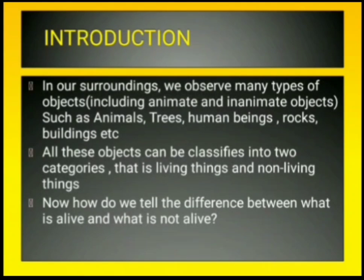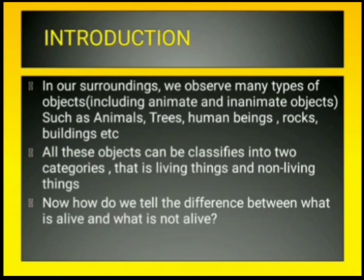Friends, in our surroundings we observe different types of objects. Some of these objects are animate, meaning living, and some objects are inanimate, meaning non-living. Examples include animals, trees, human beings, rocks, and buildings. We will classify some of them as living things and some as non-living things.